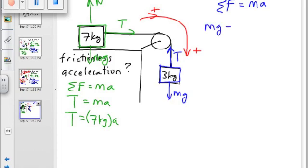Why did you do MG minus T? Because that's the direction we're going positive. Alright. Our positive direction is down. So MG is going to be positive. Tension resists it.